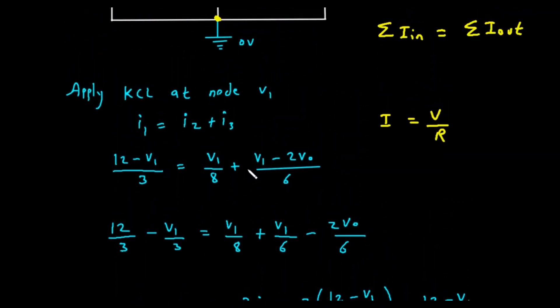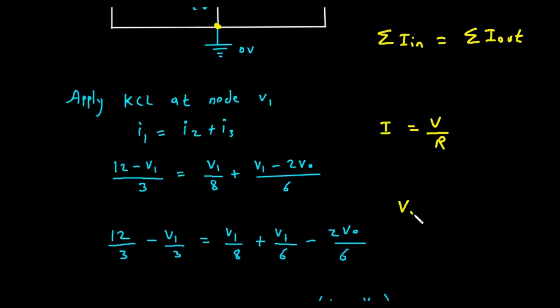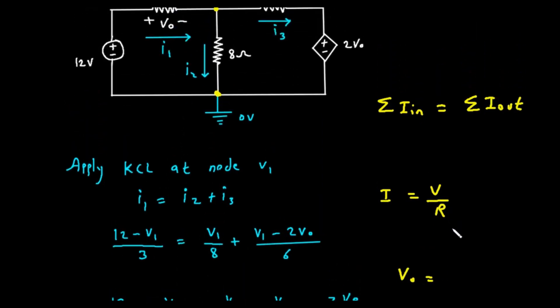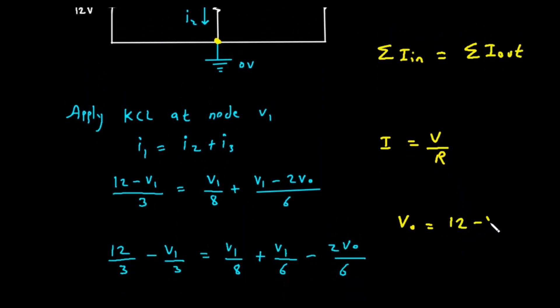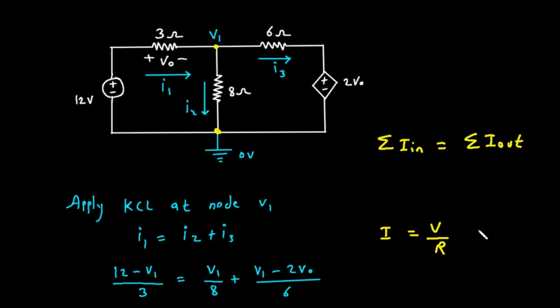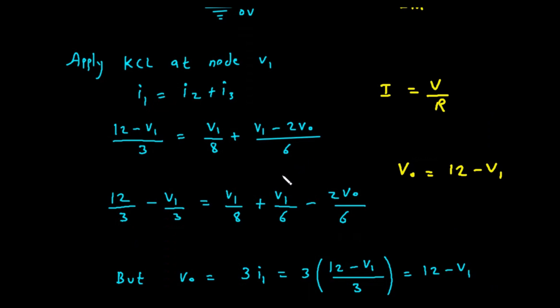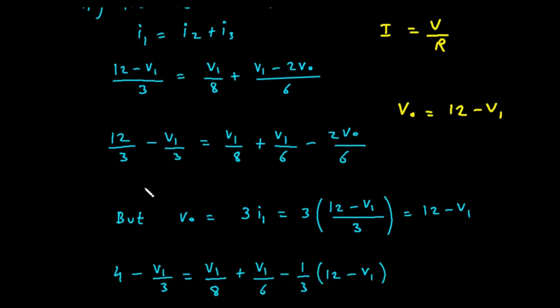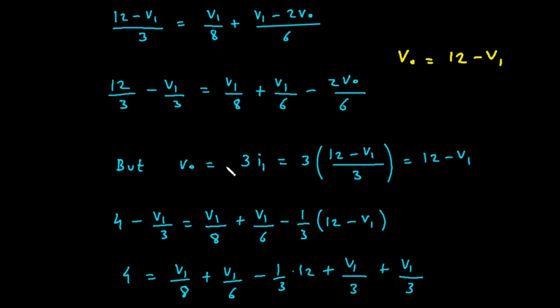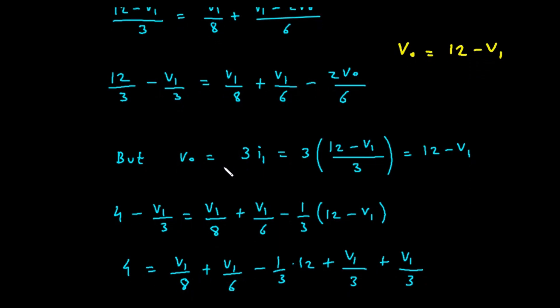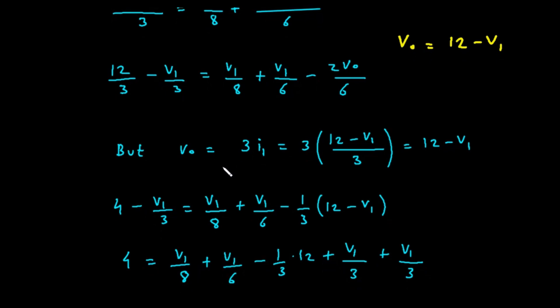Let's look at how V0 is defined. It's the voltage across the 3 ohm resistor. This means V0 is the voltage on the left side minus the voltage on the right side. The voltage on the left is 12 volts. The voltage on the right is V sub 1. So our second equation is V0 equals 12 minus V sub 1. Now we can solve the system. We will substitute our expression for V0 into our main KCL equation.